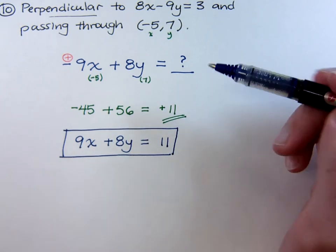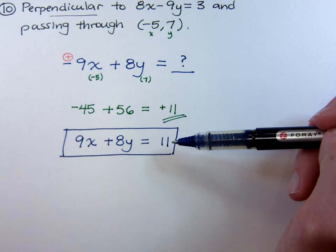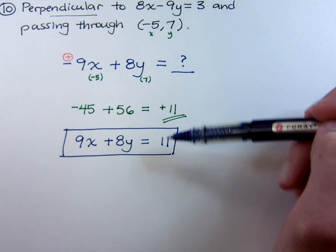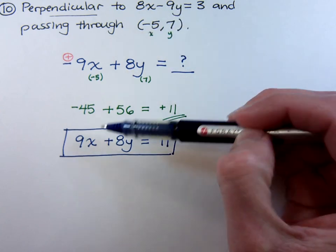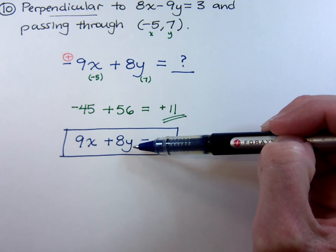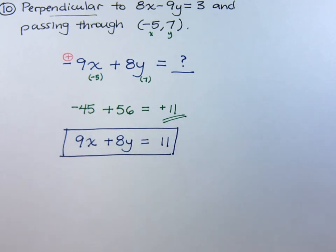If you were to solve both the original equation and this guy for y, you're going to find out that the slopes would be negative reciprocals. And you can also plug in negative 5 and positive 7, and it's going to work out because you're going to have a negative 45 and 56, which gives you a positive 11.